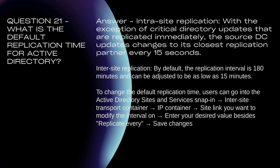Question 21: What is the default replication time for Active Directory? Intrasite replication: With the exception of critical directory updates that are replicated immediately, the source DC updates changes to its closest replication partner every 15 seconds. Inter-site replication: By default, the replication interval is 180 minutes and can be adjusted to be as low as 15 minutes. To change the default replication time, users can go into the Active Directory Sites and Services snap-in, inter-site transport container, IP container, select the site link you want to modify the interval on, and enter your desired value beside 'Replicate every.' Save changes.